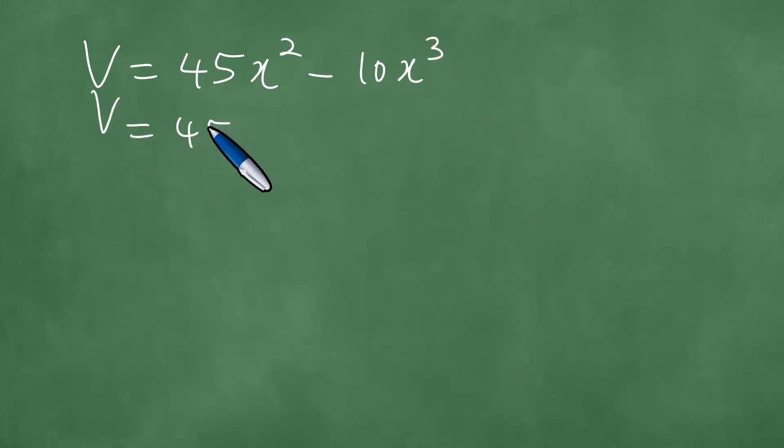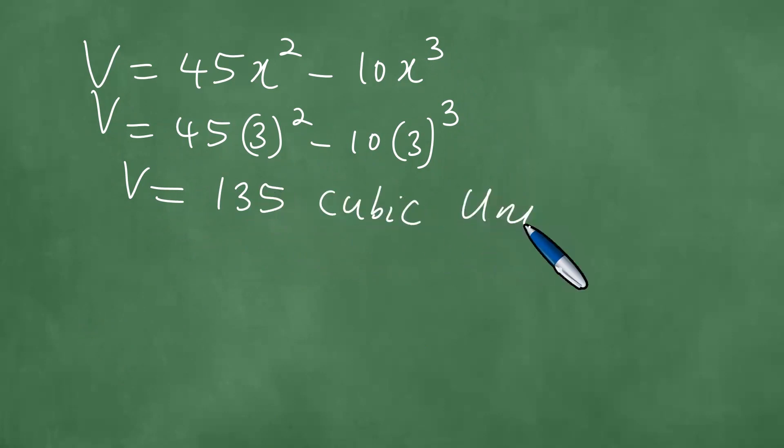Substituting x = 3, we get V = 45(3)² minus 10(3)³, which gives us 135 cubic units.